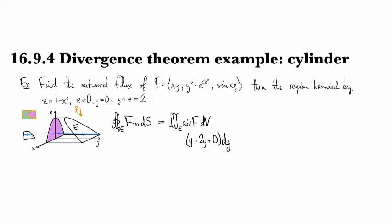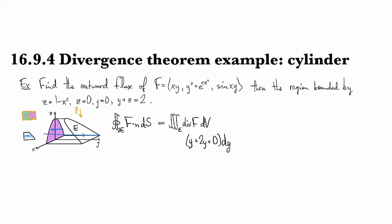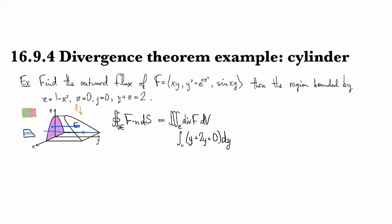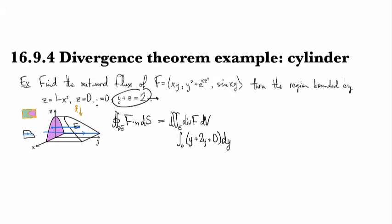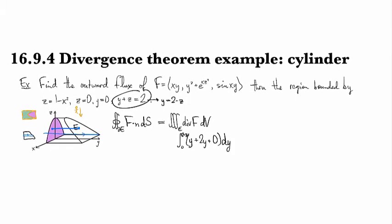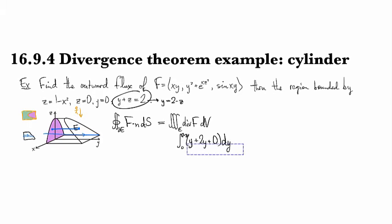We're going to do dy first, going from the purple plane out to the slanted plane — that's from y equals 0, up to y equals 2 minus z, for our upper bound of integration.